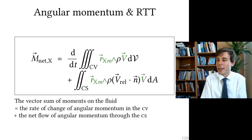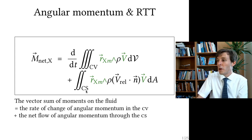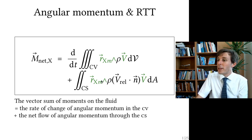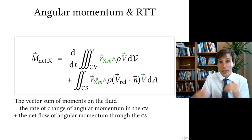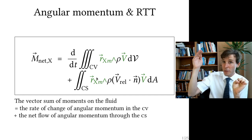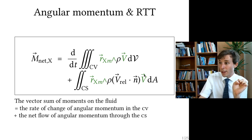This angular momentum is measured with a surface integral — the integral over the surface of the control volume. The angular momentum at any point is the position vector r crossed with the velocity, integrated over the area.